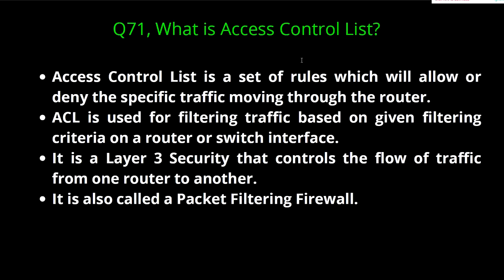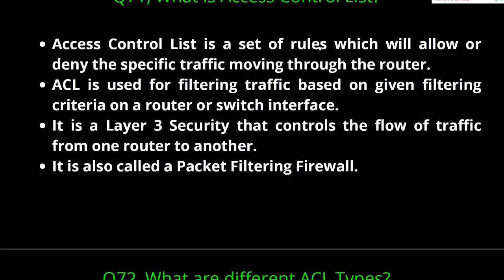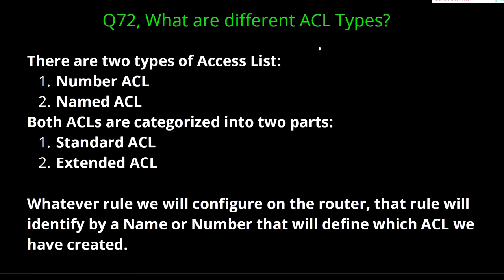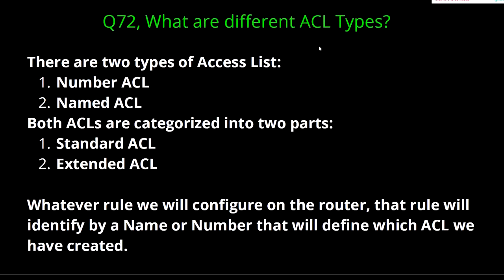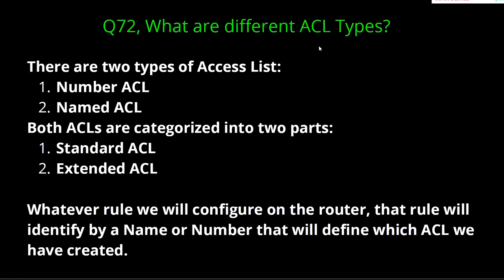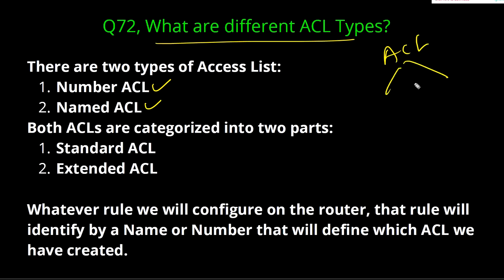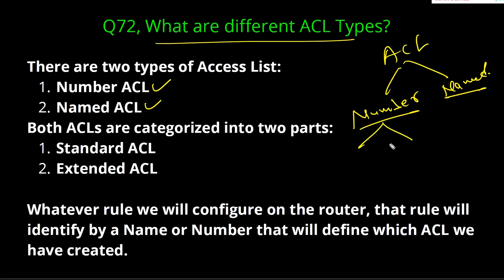This is a very important question — 'What is ACL?' Many times interviewers ask network engineers to explain ACL. Moving to question number two: What are the different types of ACL? There are two types of ACL — first is numbered ACL and second is named ACL. Both numbered ACL and named ACL are categorized into two parts: standard ACL and extended ACL.